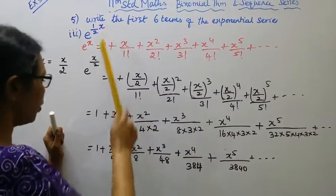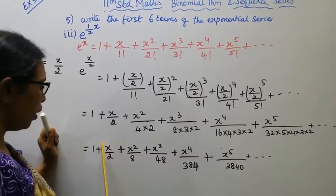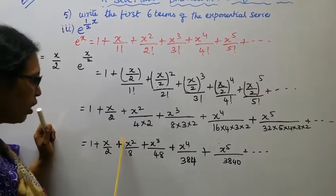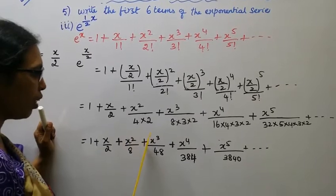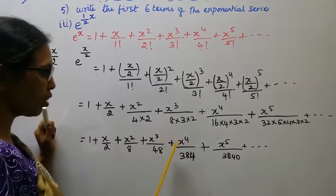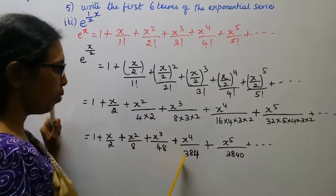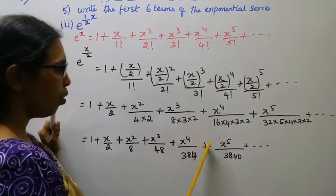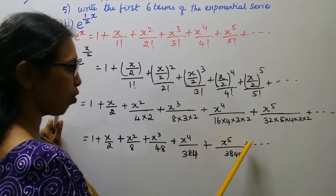Final answer: equals 1 plus 1 by 2 into x plus 1 by 8 into x square plus 1 by 48 into x cube plus 1 by 384 into x power 4 plus 1 by 3840 into x power 5.